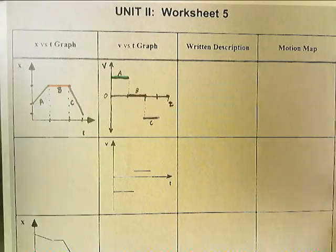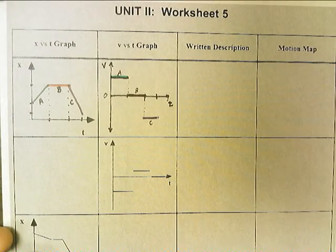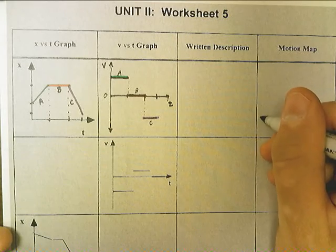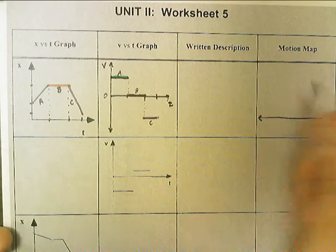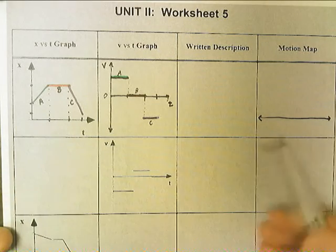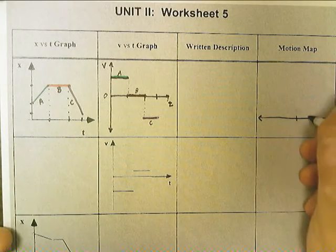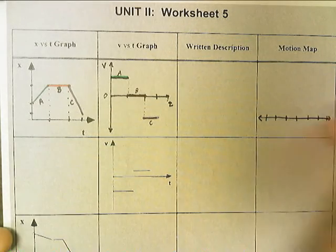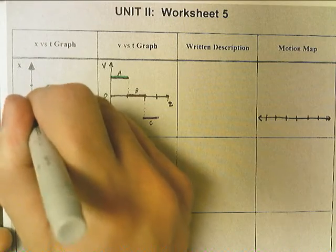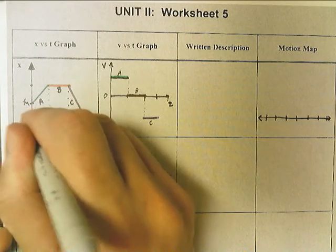Now when you make a motion map, we'll do the written description in a minute. This graph has no numbers, therefore the motion map doesn't need numbers. And here's its X1 position. And here's its X2 position.